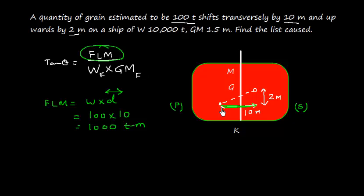In this picture, if it is shifted from port to starboard, the list moment will be towards starboard. However, if it was shifted from starboard to port, the list moment will be towards port.